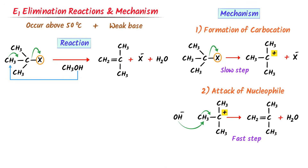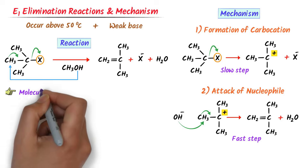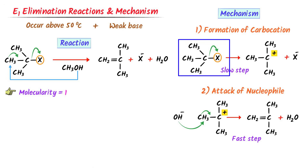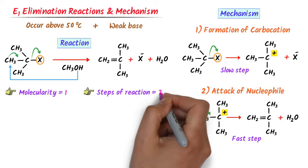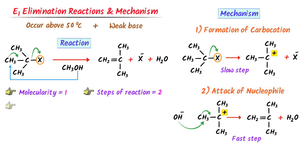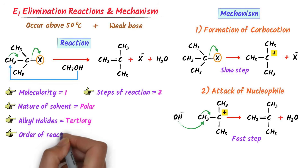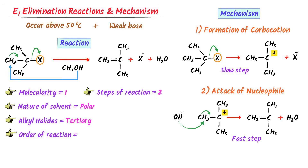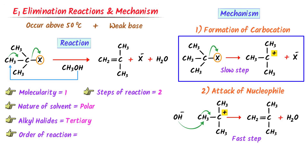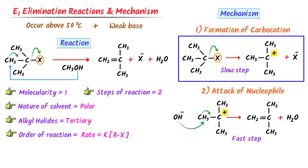Important points about E1 elimination reaction: the molecularity is 1, because only one molecule takes part in the slow step — that's why we call it E1. There are two steps. The nature of solvent is polar, such as water, methanol, and ethanol. The nature of alkyl halide is tertiary. Regarding order of reaction: slow steps determine the rate, and in E1, only alkyl halide participates in the slow step. Therefore, rate = K × [alkyl halide], and the order of reaction is 1.